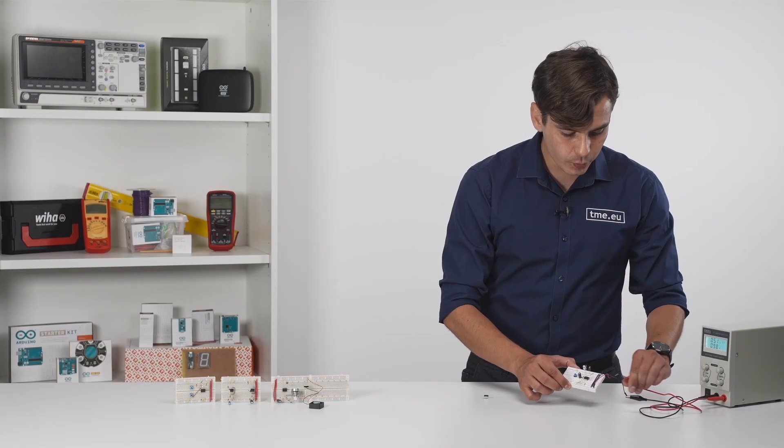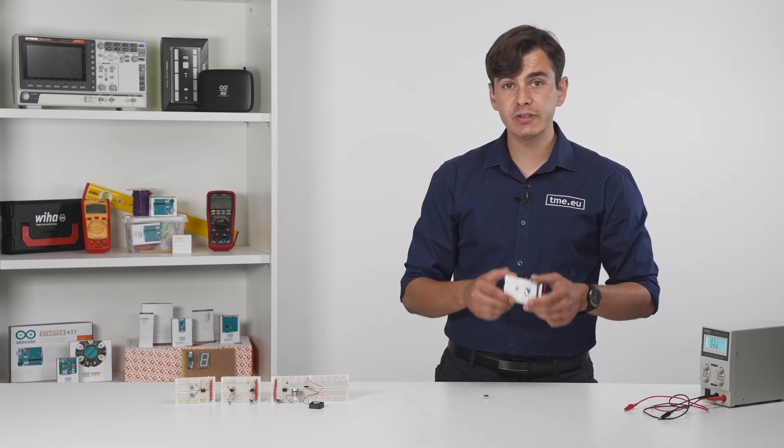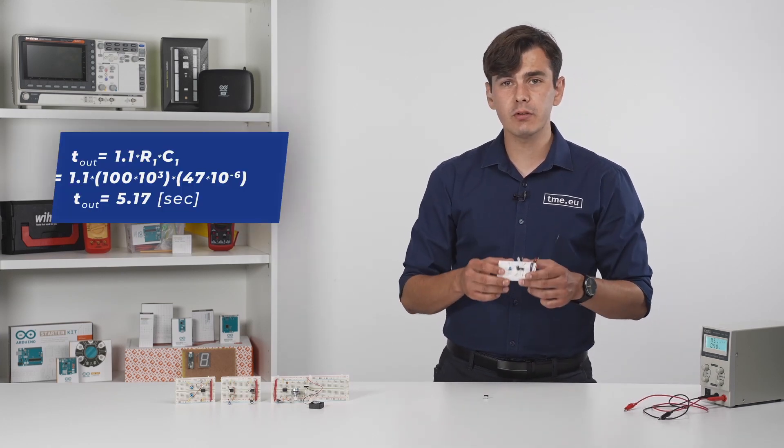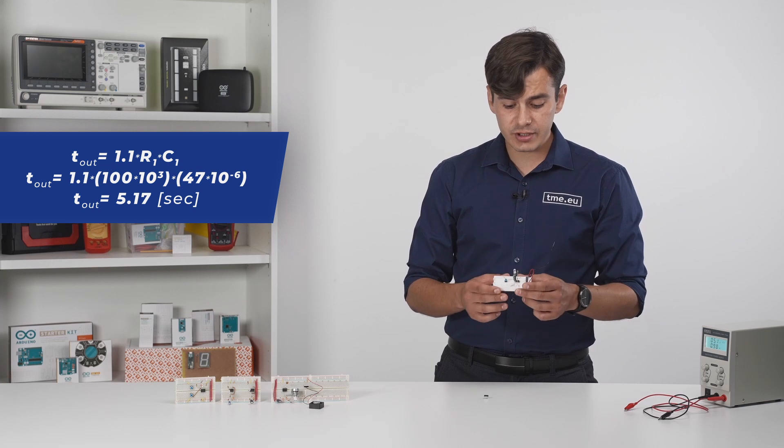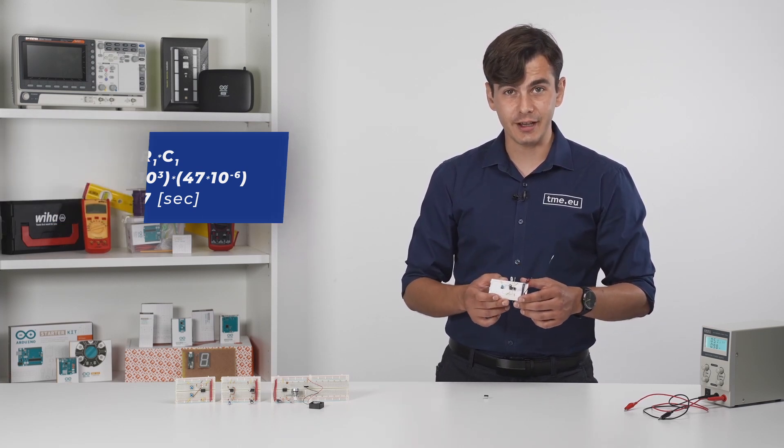In this example, we used a 100 kOhm resistor together with a 47 µF capacitor, which gives us 5.17 seconds delay.